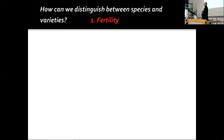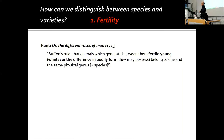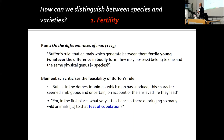So Blumenbach has to resort to another kind of definition. He goes back to definitions present at his time — from Kant or Buffon — and turns to criteria like fertility. Kant has discussed what is called Blumenbach's rule: animals that generate fertile young between them, whatever the difference in bodily form, belong to one and the same physical species. Fertility is the criterion.